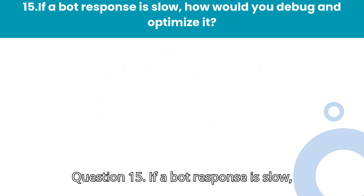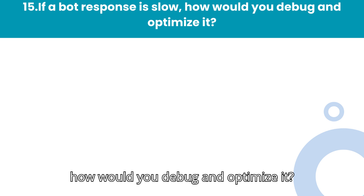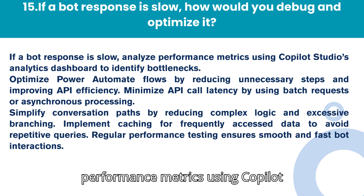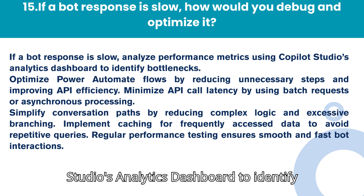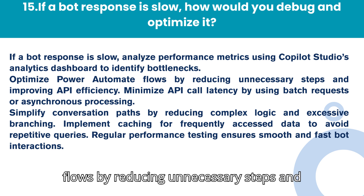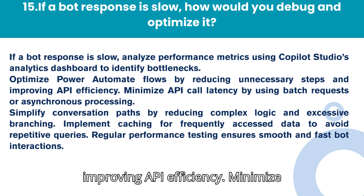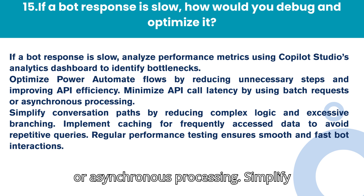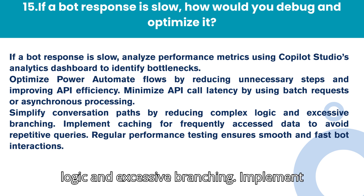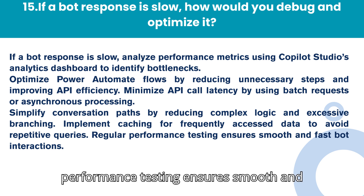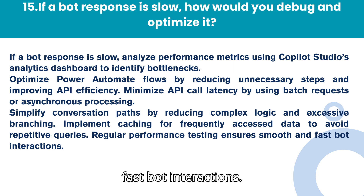Question 15: If a bot response is slow, how would you debug and optimize it? Analyze performance metrics using Copilot Studio's analytics dashboard to identify bottlenecks. Optimize Power Automate flows by reducing unnecessary steps and improving API efficiency. Minimize API call latency by using batch requests or asynchronous processing. Simplify conversation paths by reducing complex logic and excessive branching. Implement caching for frequently accessed data to avoid repetitive queries. Regular performance testing ensures smooth and fast bot interactions.